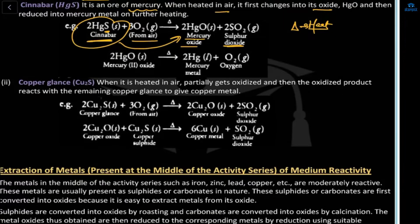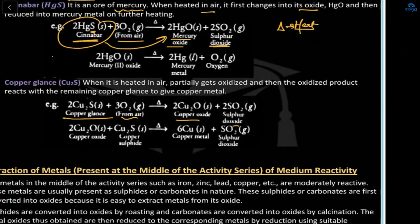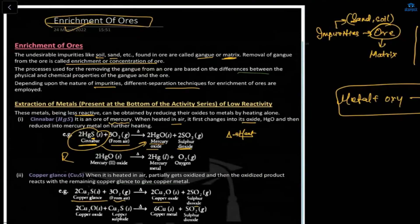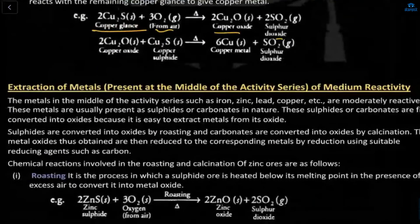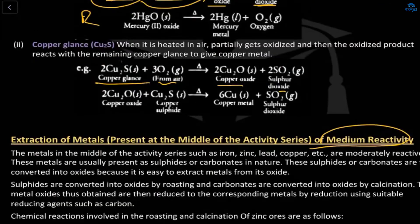Similarly, copper glance (Cu2S) combined with air forms copper oxide and sulfur dioxide. So for low-reactivity metals, combining the ore with air (oxygen) gives a metal oxide as product. This is the extraction process for low-reactivity metals.